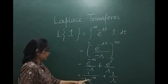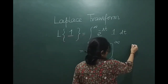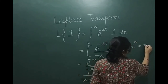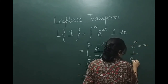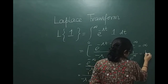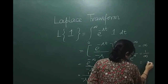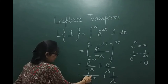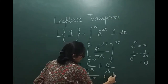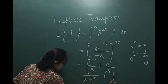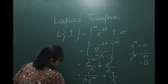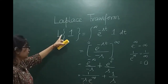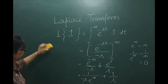Now look — 1 divided by e^(infinity): e^(infinity) is infinity, so 1 divided by e^(infinity) is 1 divided by infinity, which is nothing but 0. So this part becomes 0, and the remaining term is 1/s. So this is the value for the Laplace transform of 1.